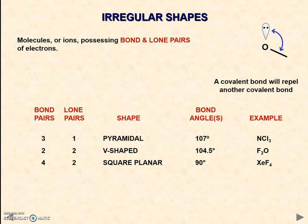When you have lone pairs present, we have different bond angles and a different set of shape names. With three bond pairs and one lone pair, you have a pyramidal shape. If you have two bond pairs and two lone pairs, a V shape.